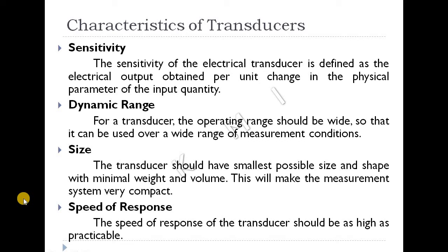Then size — the transducer should have the smallest possible size and shape with minimal weight and volume, making the measurement system very compact. And speed of response — the speed of response of the transducer should be as high as practicable, meaning the output is very fast. These are the ten characteristics of the transducer.